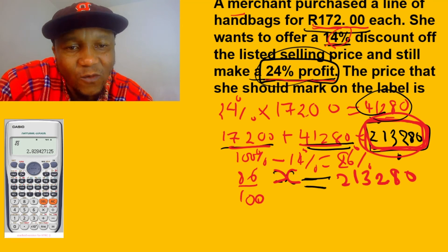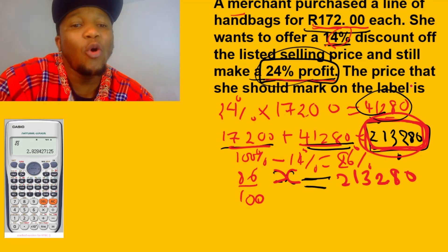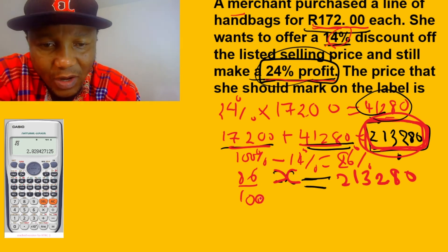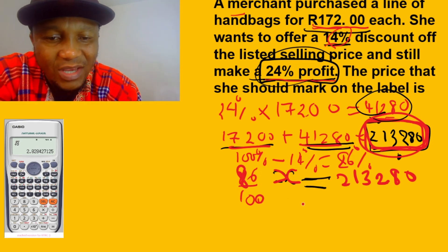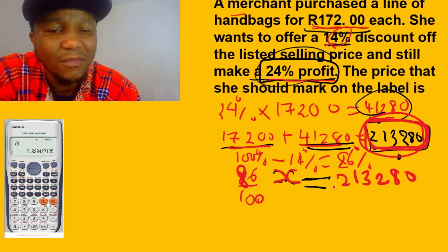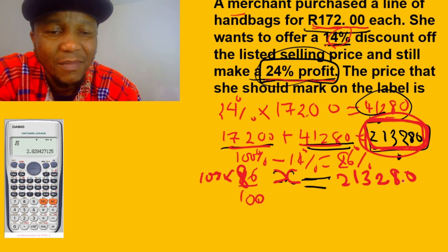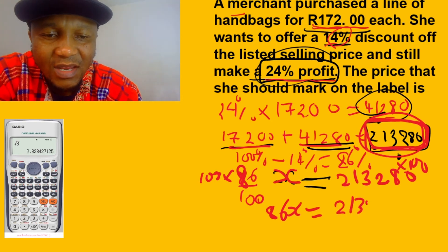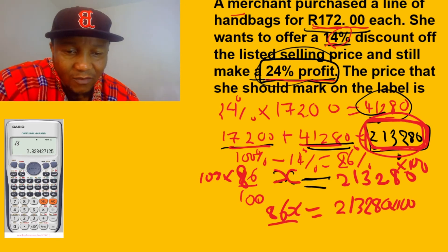We're looking for x — the price she should mark on the label. So now we simplify for x. I multiply both sides by 100, giving us 86x equals 213.28 times 100. Then divide both sides by 86.